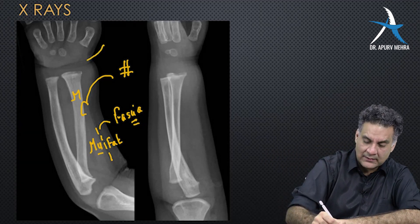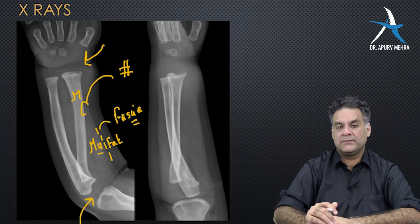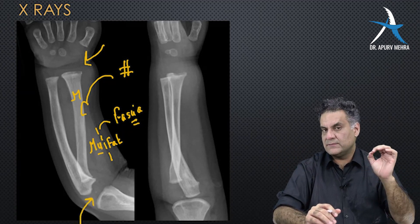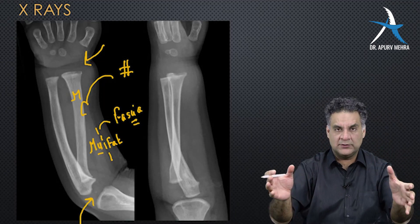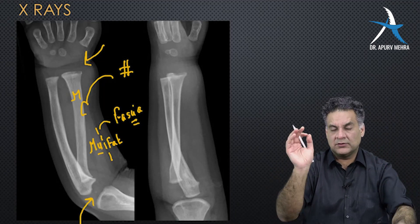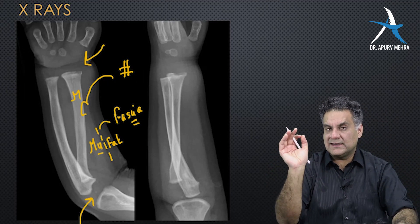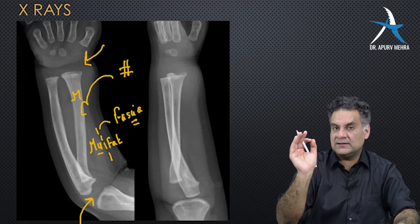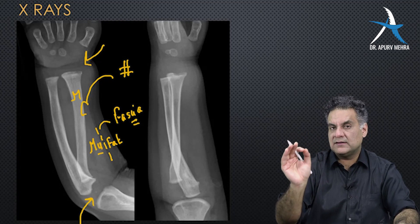The third thing X-ray can tell you about is joint space. Joint space is filled with cartilage, and cartilage is radiolucent. So when you see a decreased joint space on X-ray, it means the cartilage is getting destroyed — it means we are dealing with arthritis.